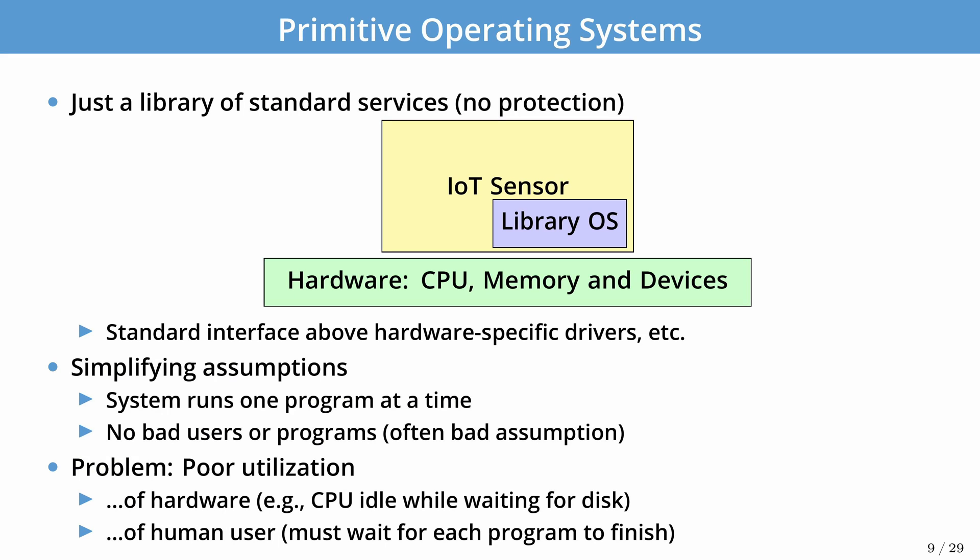So let's look at the most primitive operating system we could have. The most primitive OS is just a library of services — it might not provide any protection and may provide very simple services. It's a standard library designed to support the hardware and make it more useful for an application developer. This is the kind of OS you'd find in an embedded or IoT device, and it assumes it's running just one single program with no malicious users or programs.